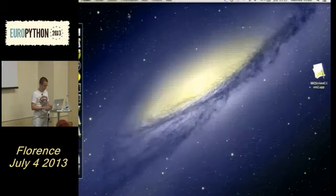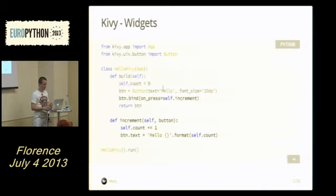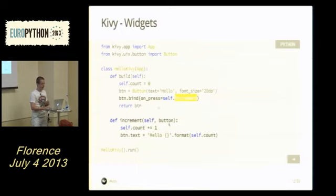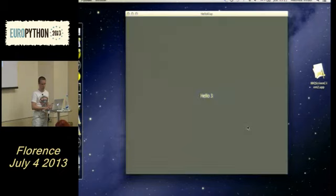I can click on it but it does nothing. Let's add something: I create a numeric property named count set to zero, bind the on_press event of the button to an increment callback. For every event we always pass the source as the first argument, so you can bind multiple buttons to the same method and know the origin. Inside the method I increment count and update the button text.